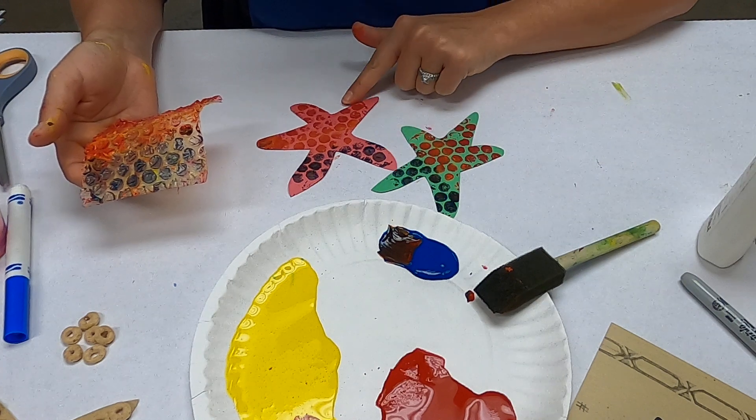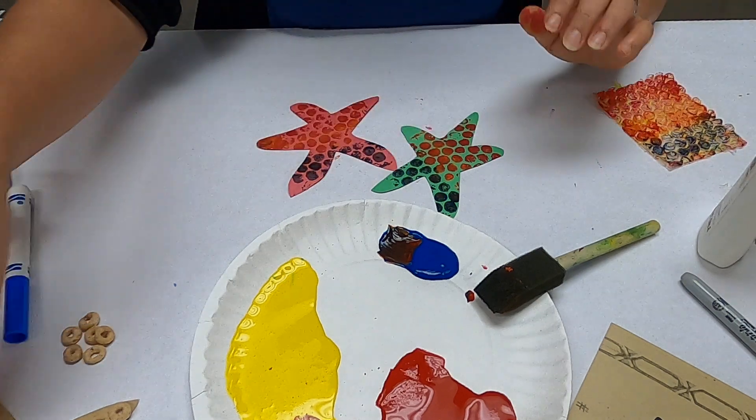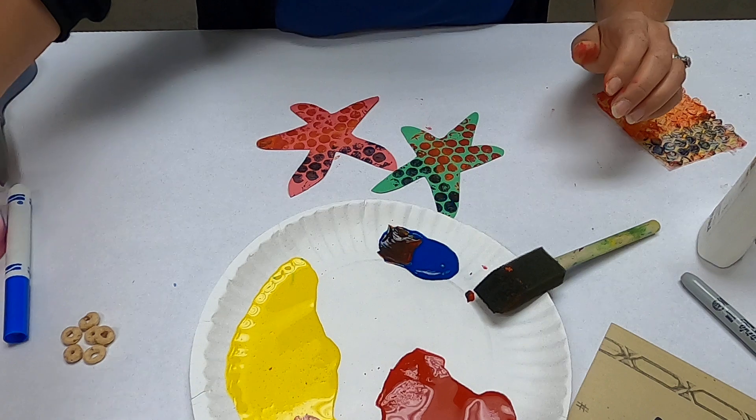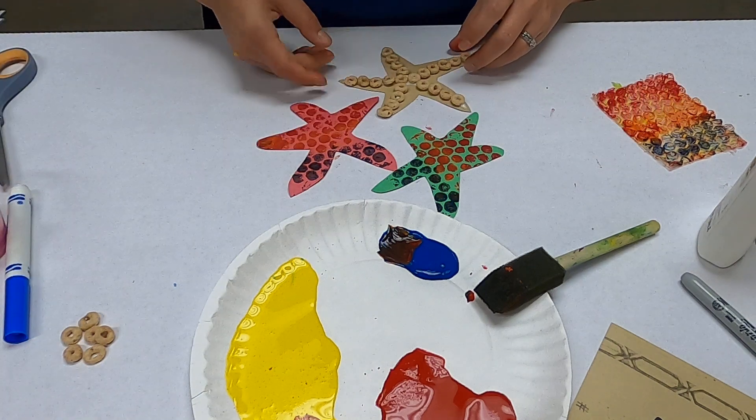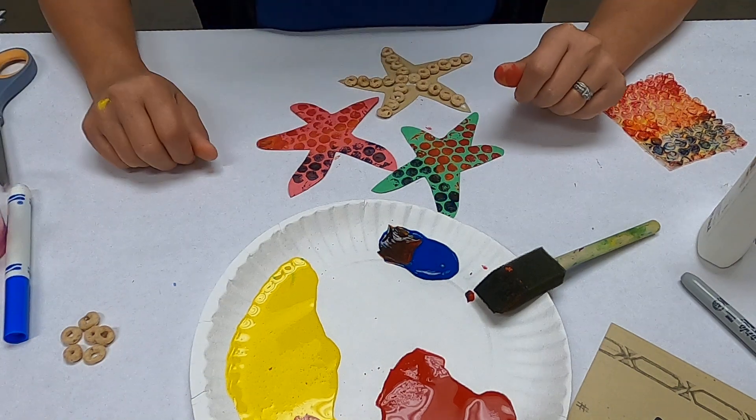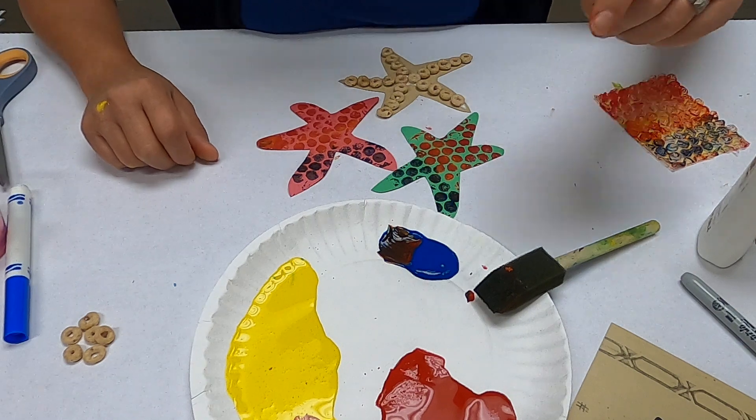That is how you use bubble wrap to make a little printed starfish. So that is our second video today on how to make a couple different starfish to go along with our book, A House for Hermit Crab. Thanks for joining us, bye!